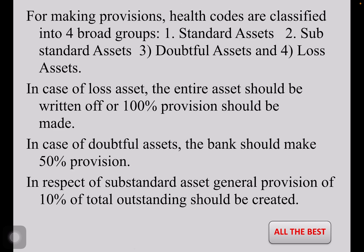For making provisions, health codes are classified into four broad groups. They are: standard assets, substandard assets, doubtful assets, and loss assets.